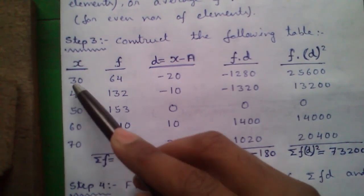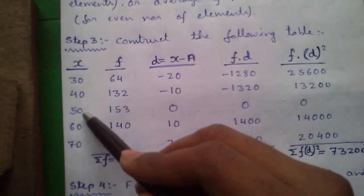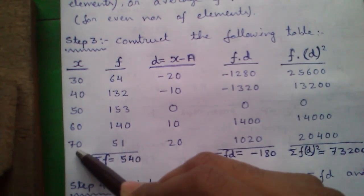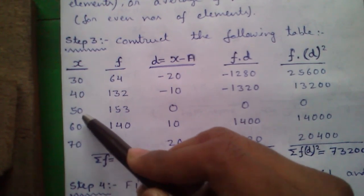In case of odd numbers of elements, here 5 elements. In case of even numbers of element, just take the average of middle two elements. Say here another number 80, then we will take the average of 50 and 60.